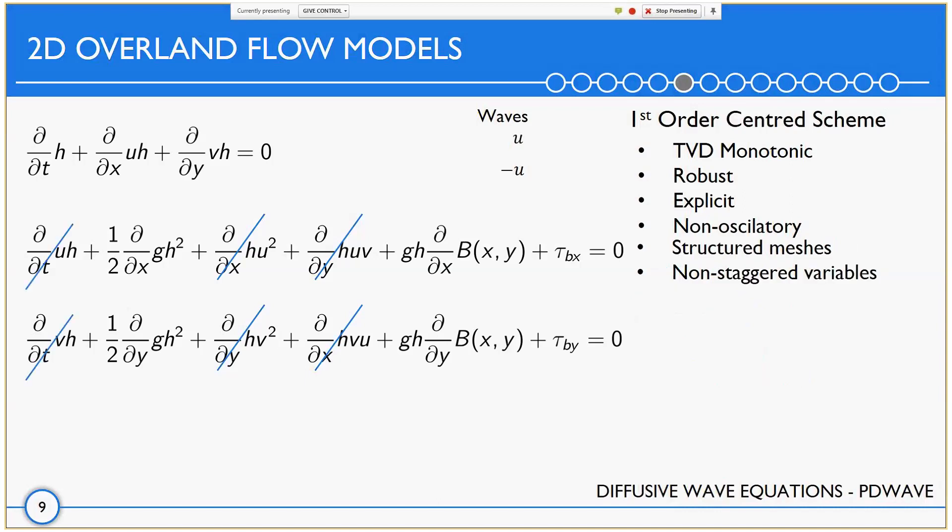The diffusive wave model, PD wave, neglects all but the pressure acceleration and the bed elevation terms and the friction terms. It has no backwater effect and is very diffusive. These equations were computed using a finite volume structured centered scheme with unstaggered variables.